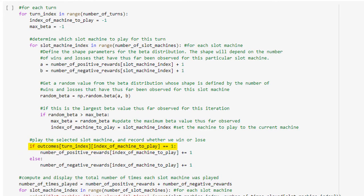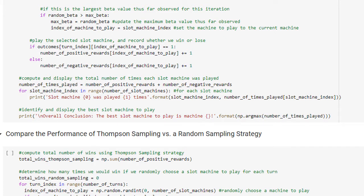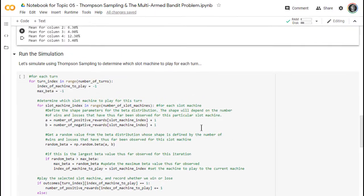We then play the selected slot machine by looking up the outcome in our dataset and record whether we won or lost by incrementing the appropriate element in either the number of positive rewards array or the number of negative rewards array. We then repeat the entire process until we have played all 1,000 rounds. Our AI system is continuously learning about the environment in each round, and is using its accumulated knowledge to decide whether to explore or exploit. After all 1,000 rounds are finished, we compute the total number of times that our AI agent played each slot machine, and then print the results to the screen. Let's run the code cell and see what happens.